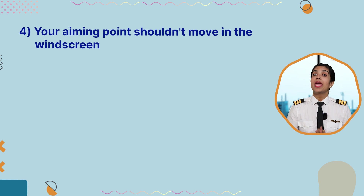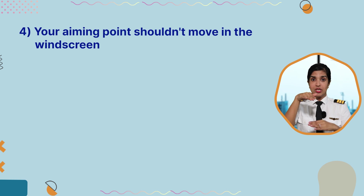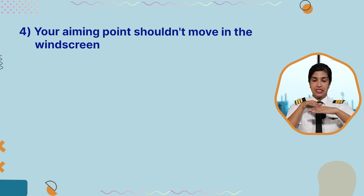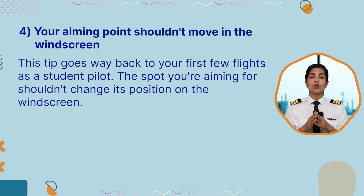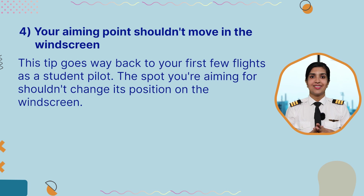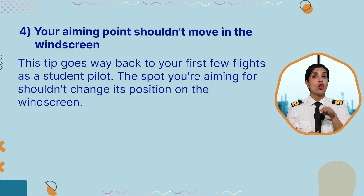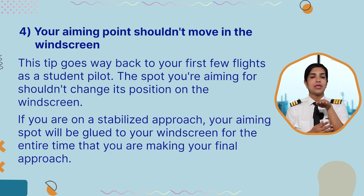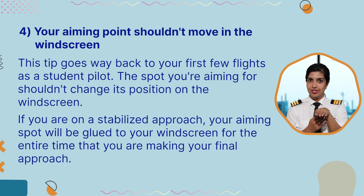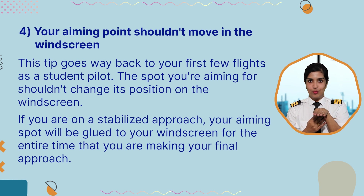The fourth point is your aiming point. The aiming point should not be moving on the windscreen — this tip goes way back to your first few flights as a student pilot. The spot you're aiming for shouldn't change its position on the windscreen. If you're on a stabilized approach, your aiming spot will be glued to your windscreen for the entire final approach.